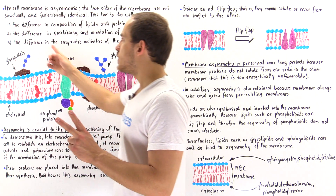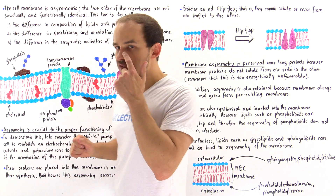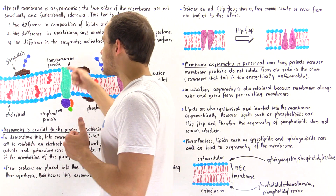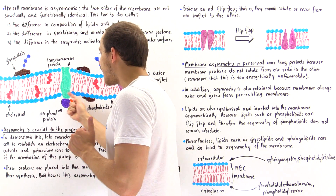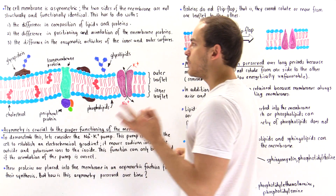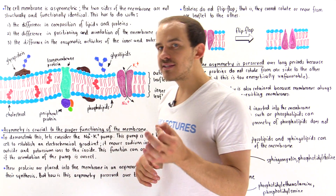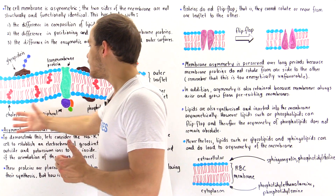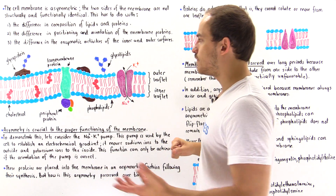Number two: we have asymmetry because of the difference in the positioning and orientation of proteins. For instance, if we look at this transmembrane protein, it is oriented so that this side only contains the peripheral component protein and not the other side. Number three: there is asymmetry as a result of a difference in the enzymatic activities of the two sides — reactions that take place on this side of the membrane don't take place on this side and vice versa.